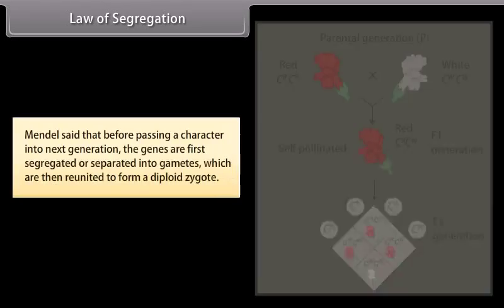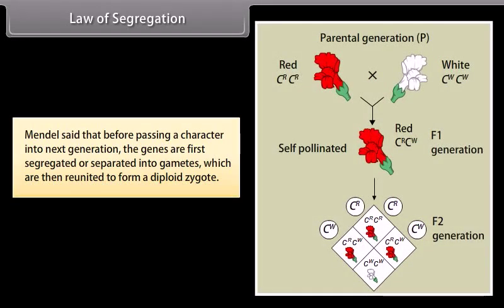Law of segregation. Mendel said that before passing a character into next generation, the genes are first segregated or separated into gametes, which are then reunited to form a diploid zygote.